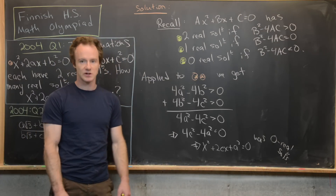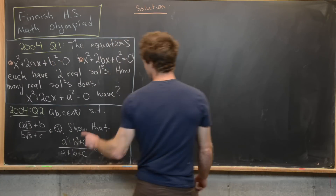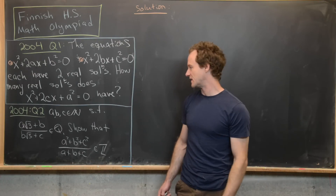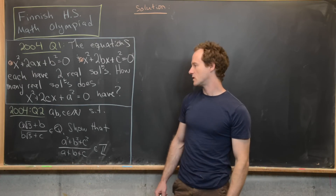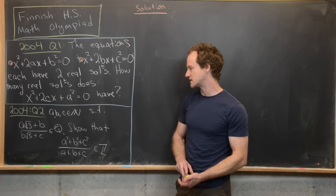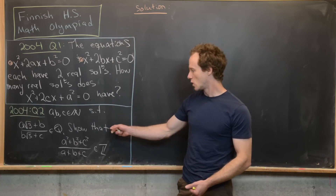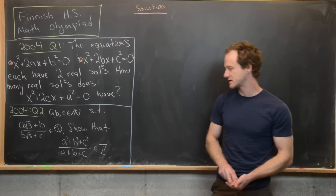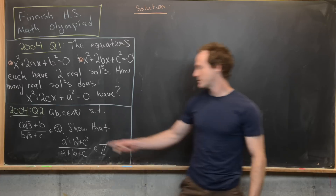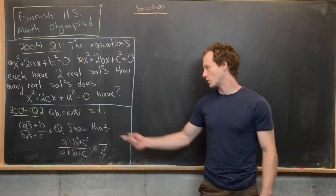Let's get rid of that and look at the solution to the second problem. We have a, b, and c which are natural numbers — positive integers — satisfying the condition that (a√3 + b) / (b√3 + c) is a rational number. Our goal is to show that (a² + b² + c²) / (a + b + c) is an integer. Somehow this condition allows for a simplification of this quotient.